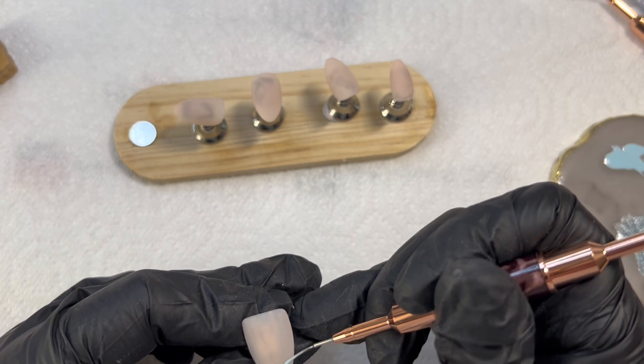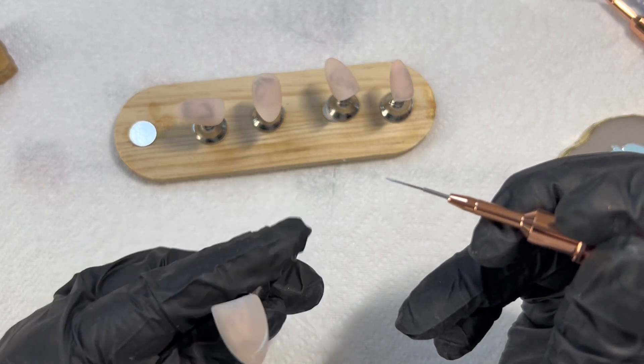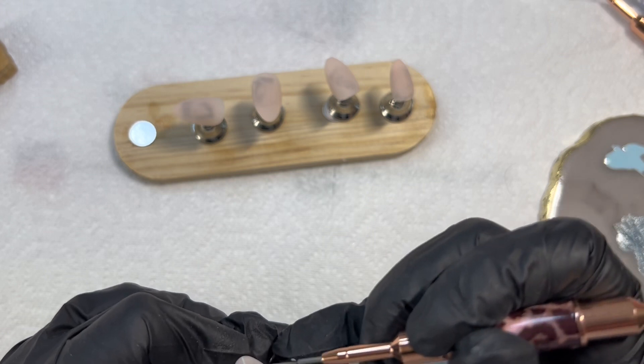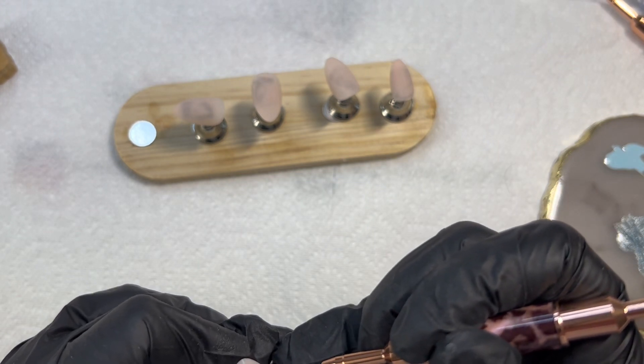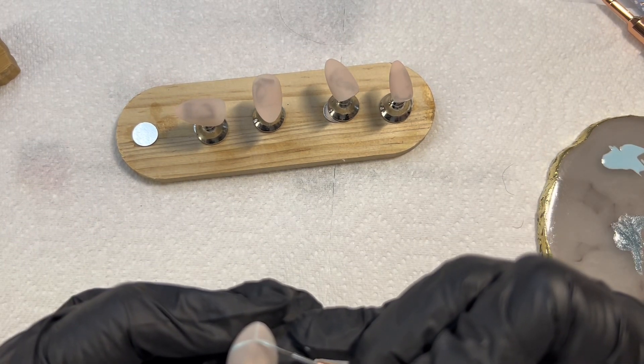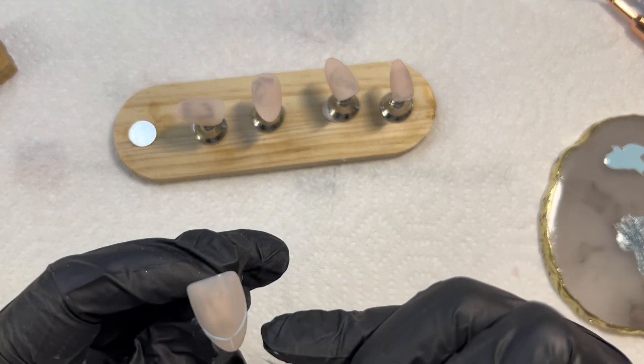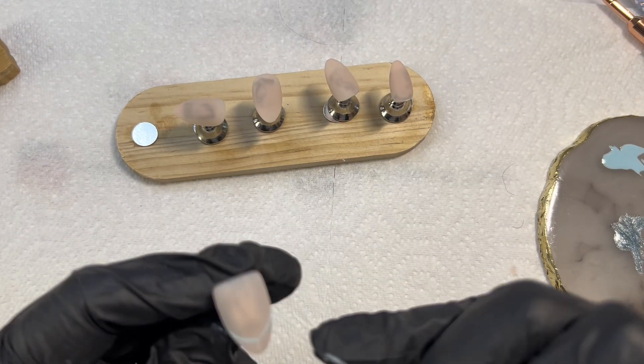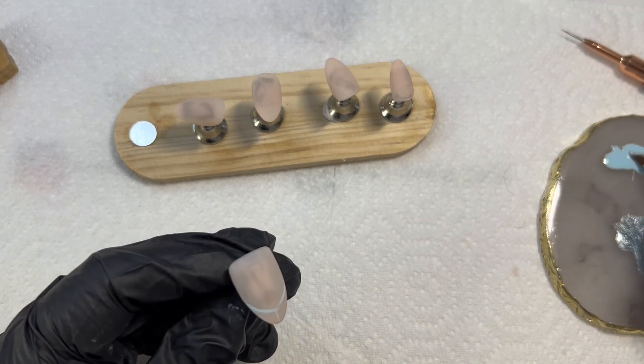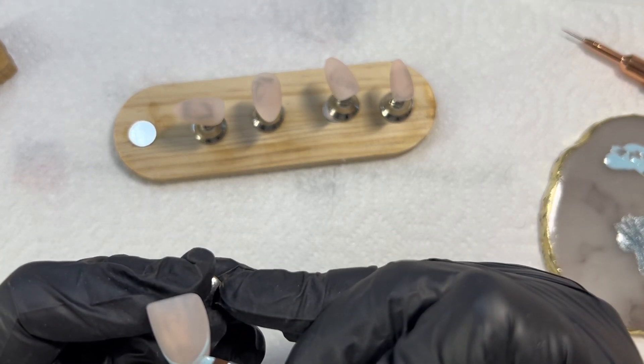I'm just taking a fine detailer brush and just mapping out a bit of a French line. Apologies, I do skip to shot a lot here, but you get the gist of it. I do my French lines a few different ways. This time I put a line in the center and then curve the line either side, and then I'm filling it in with an angle brush.